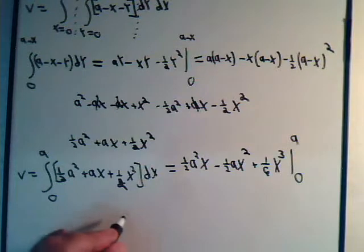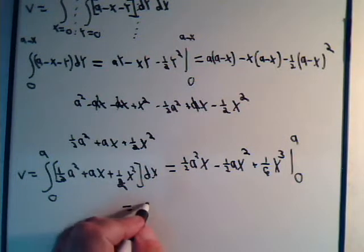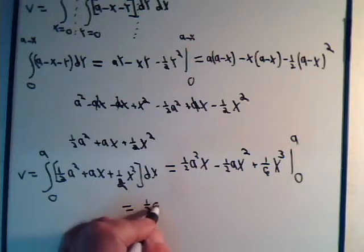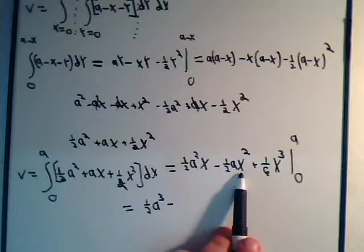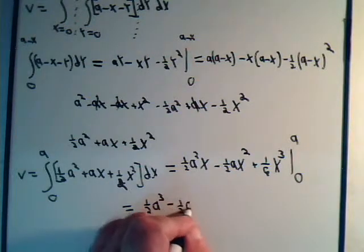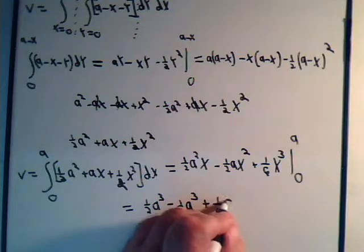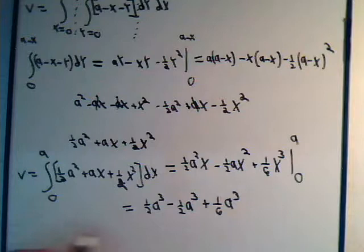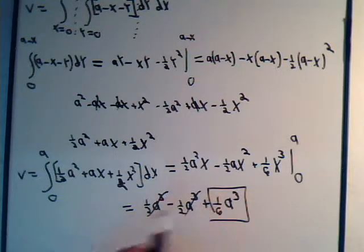Okay, so this will leave us with one half a cubed minus one half a cubed plus one sixth a cubed. Looks like these are going to cancel. So there, finally, is our volume: one sixth a cubed.